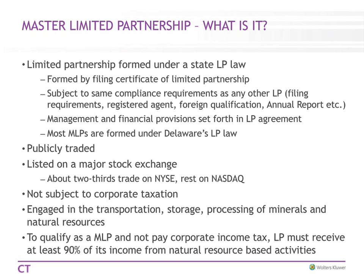To form a Master Limited Partnership, you file a Certificate of Limited Partnership — most are done in Delaware. It's subject to the same name compliance requirements as any other limited partnership. Since these are not generally public-facing, it's not too hard to come up with a name. You have to have a registered agent, qualify to do business in other states, and file an annual report. The advantage is you can be listed on a major stock exchange — about two-thirds are on the New York Stock Exchange or NASDAQ. They are not subject to corporate taxation and can be engaged in the transportation, storage, and processing of minerals and natural resources. The LP has to receive at least 90% of its income from natural resource-based activities.